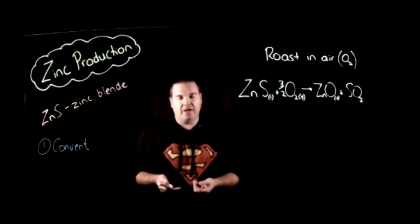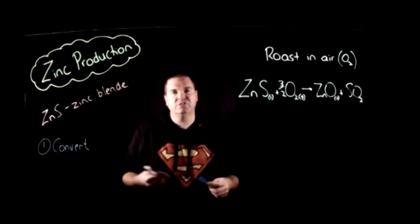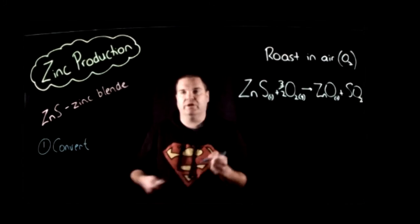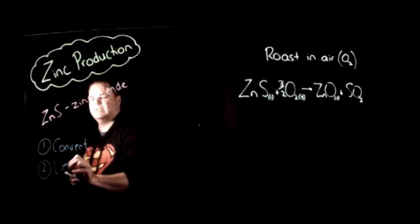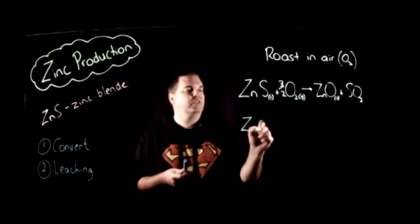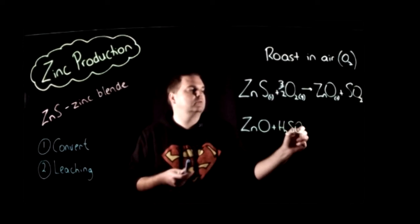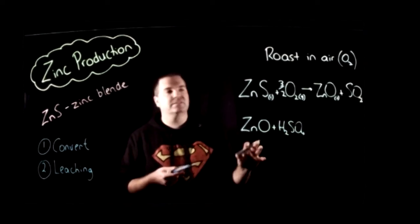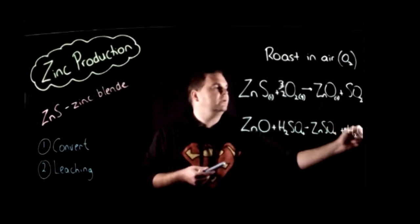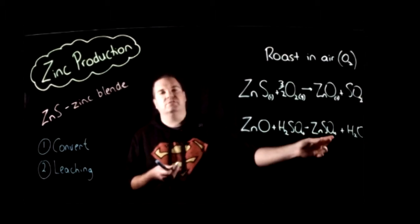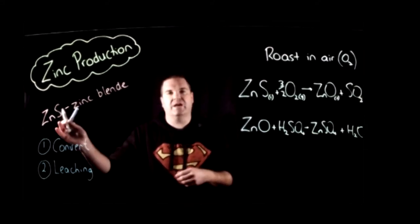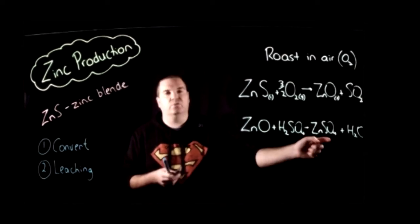Now what we do is dissolve it — what's called leaching — into a solution of water containing some sulfuric acid, which allows us to make a solution that we can electrolyze. So the second step is your leaching or dissolving. We take our zinc oxide and dissolve it in sulfuric acid. Metal oxides are basic, so it's just an acid-base reaction: we get a salt — zinc sulfate — and water. The really good thing now is that we have a solution we can electrolyze. Sulfate salts are good to electrolyze because the sulfate doesn't react. So we've converted it from zinc sulfide, which is dangerous to electrolyze, into zinc sulfate, which is quite useful.